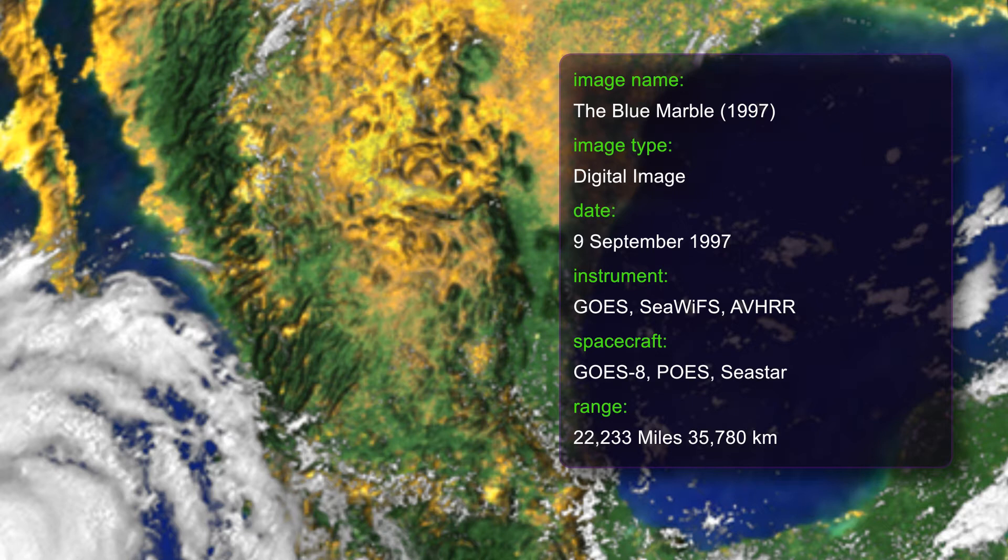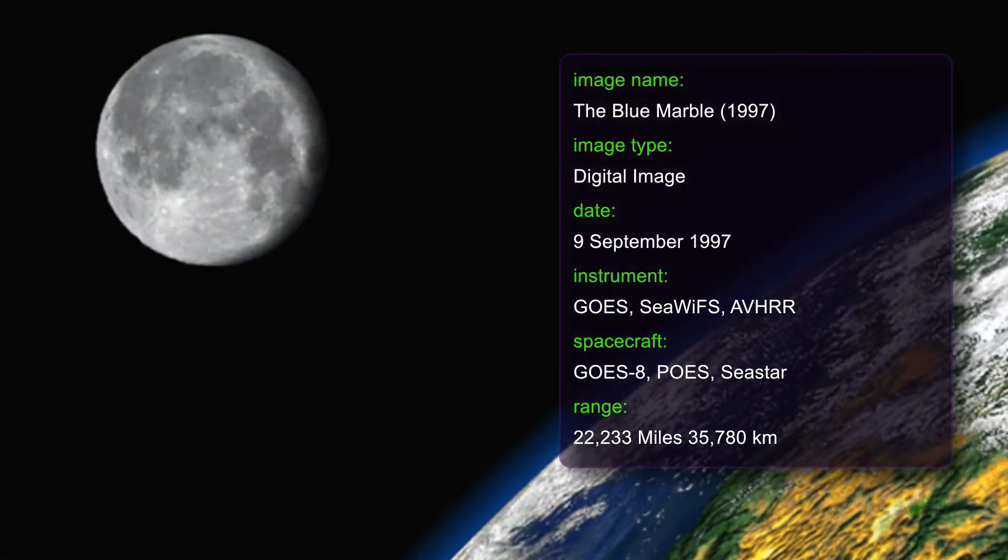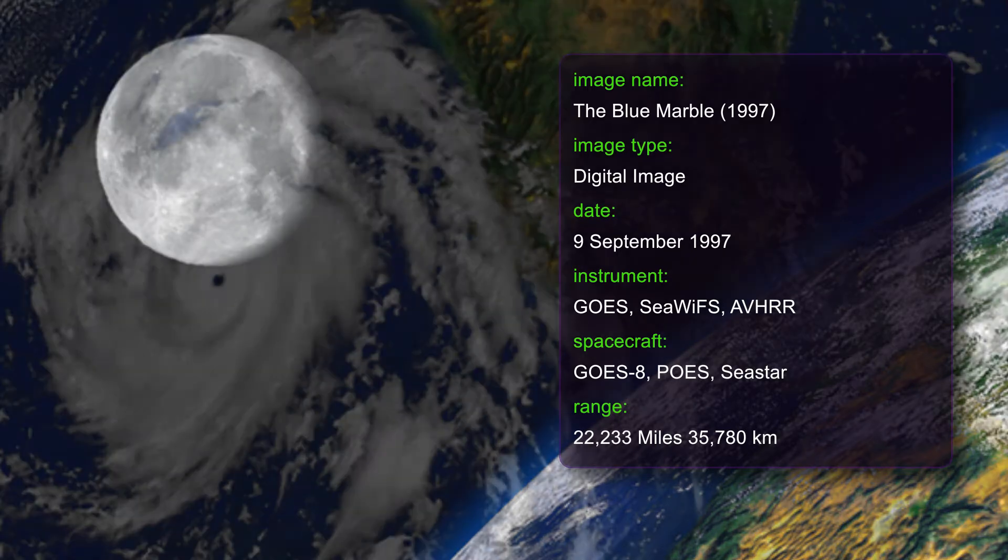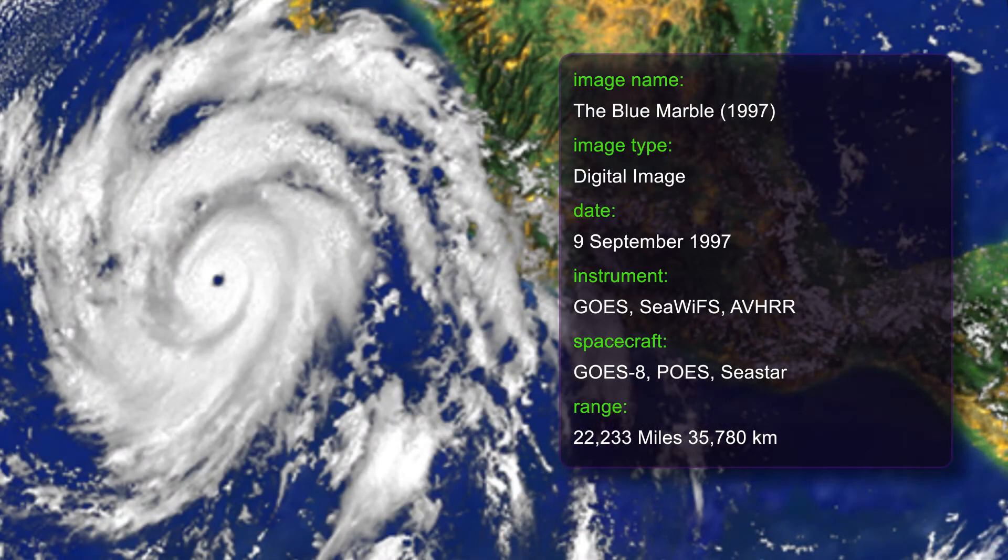The heights of the mountains and the depths of the valleys have been exaggerated by 50 times their actual levels so that vertical relief is visible. The Moon is an artistic addition. The lunar image was collected from a GOES satellite in September 1994 and has been magnified to about twice its relative size. The prominent storm raging off the west coast of North America is Hurricane Linda.